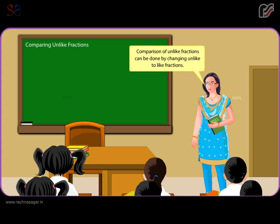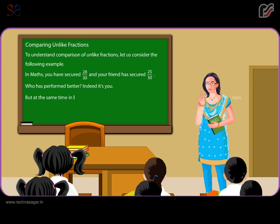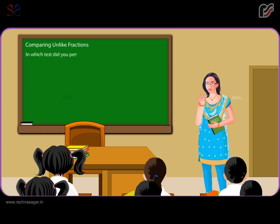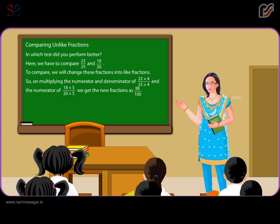Comparing unlike fractions can be done by changing unlike to like fractions. For example, in maths you scored 28 by 30 and your friend scored 25 by 30 — you performed better. But in English, you scored 22 out of 25 in one test and 18 out of 20 in another. To compare 22 by 25 and 18 by 20, we convert them to like fractions by multiplying: 22 by 25 becomes 88 by 100 and 18 by 20 becomes 90 by 100. Since 88 by 100 is less than 90 by 100, you performed better in the second test.